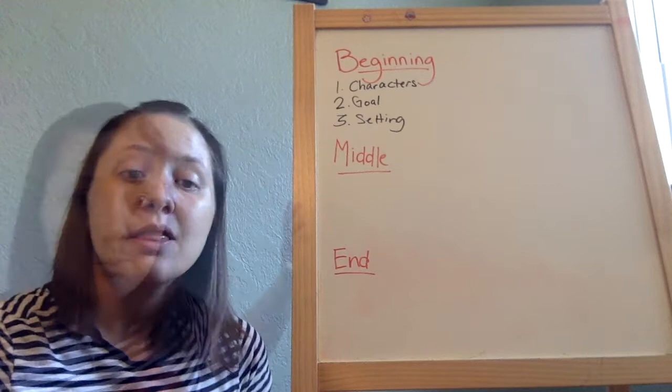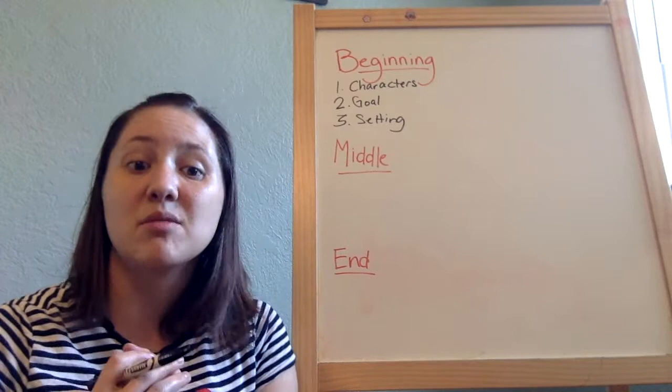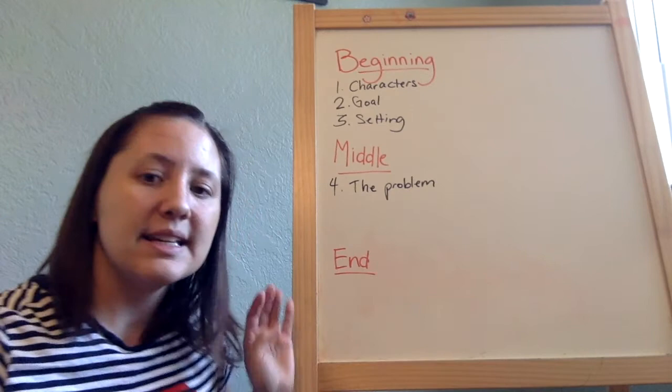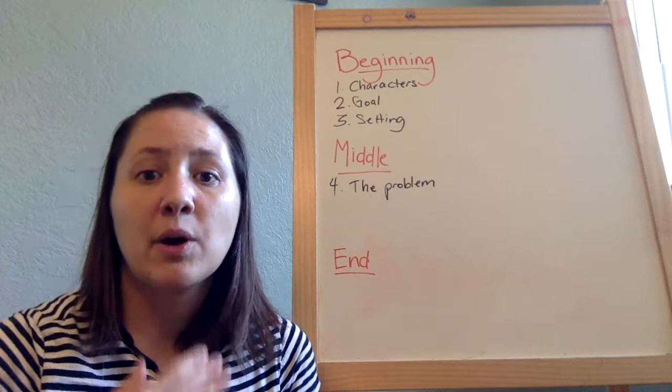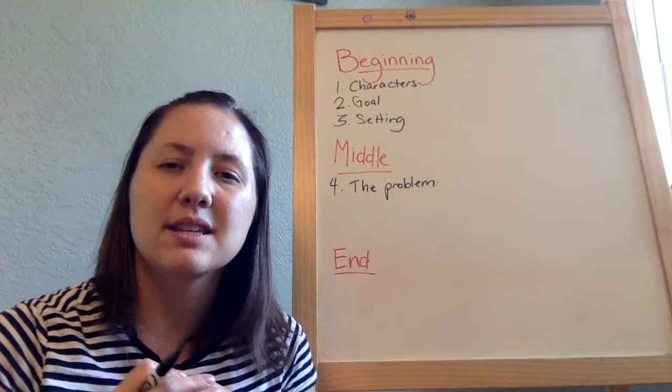Now we're going to move on to the middle. Either at the end of the beginning or the start of the middle, you learn something that is almost the most important thing for any story to have — the problem. The problem is whatever is stopping the main character from getting their goal. Really, every story is about a character who has a problem and tries things to deal with it.